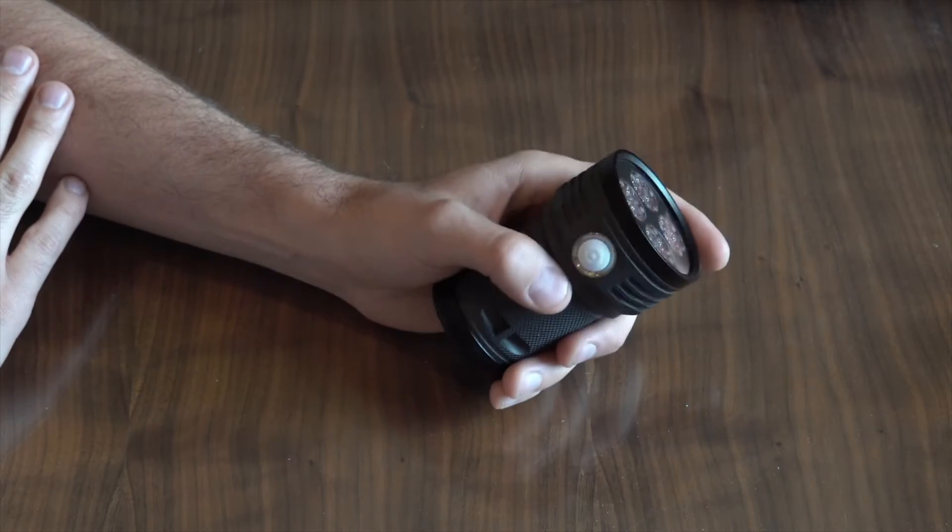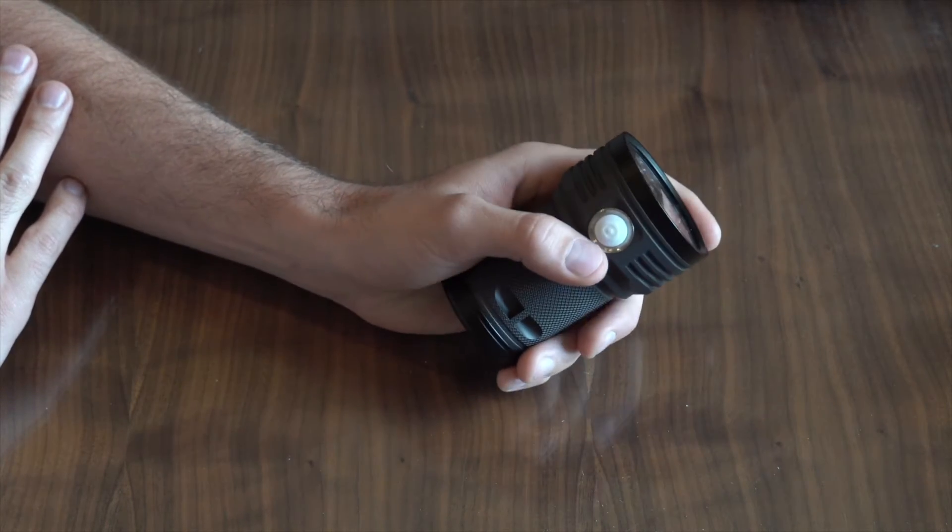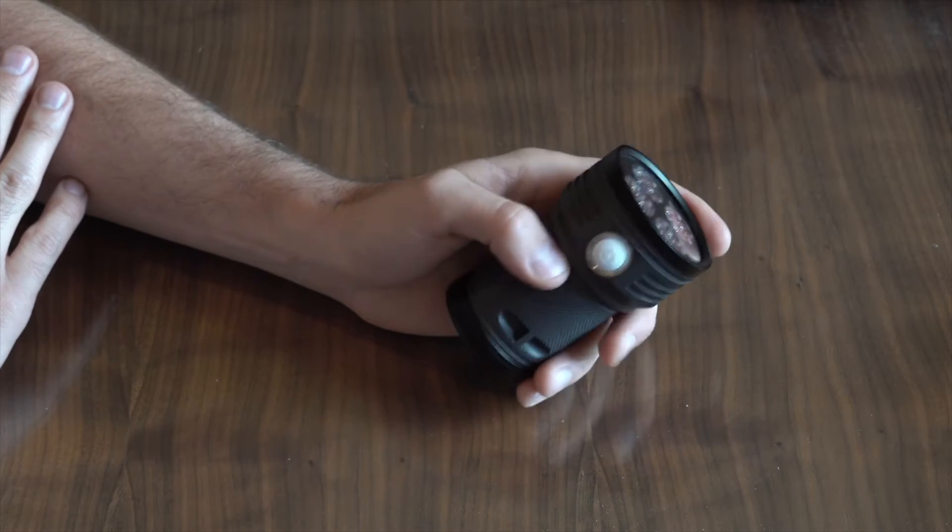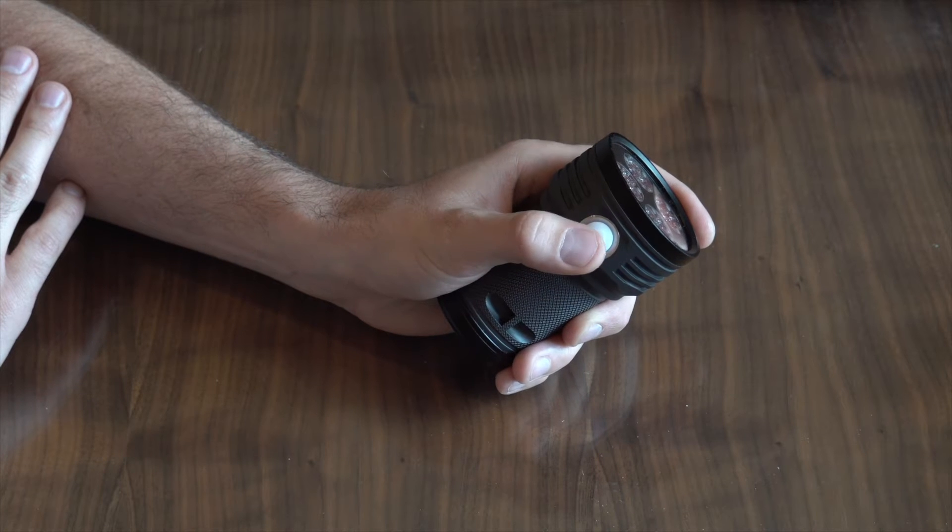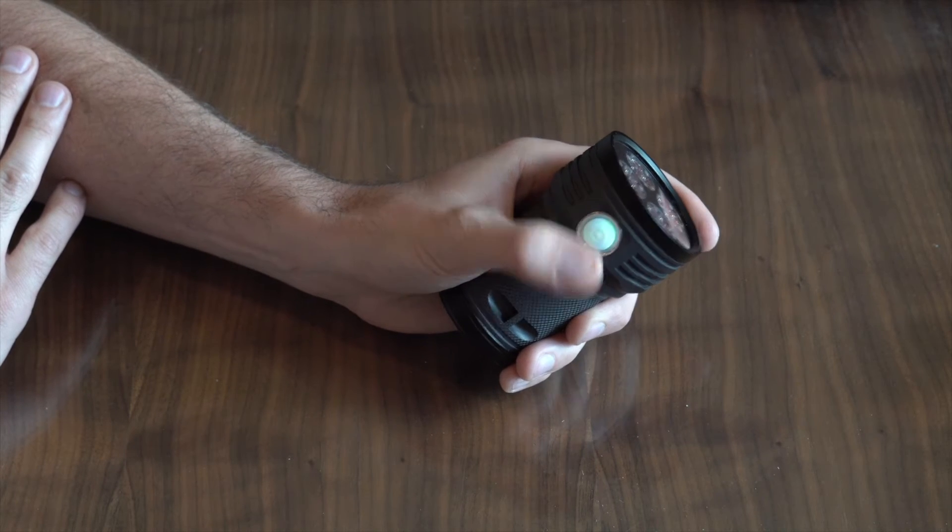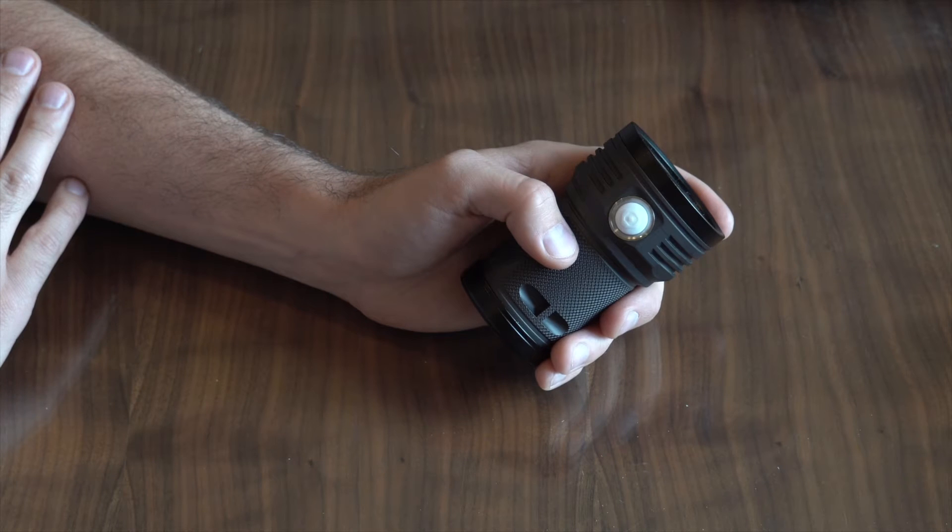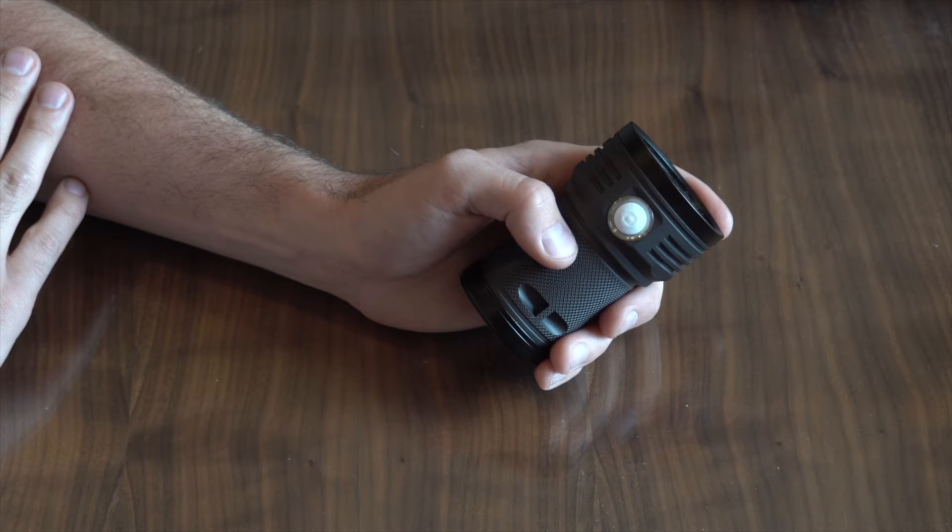You can also have both of the functions enabled at the same time. And so if I wanted to add the beacon to the steady state, again I would give two clicks and hold. So now we have both the steady state and the beacon.